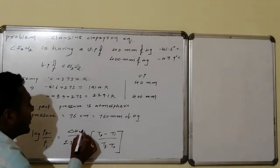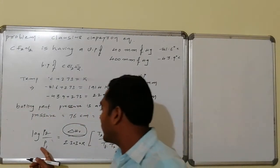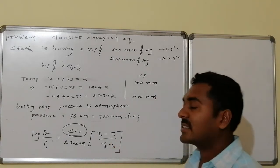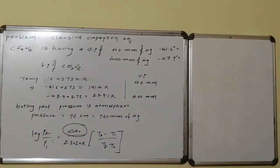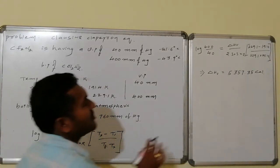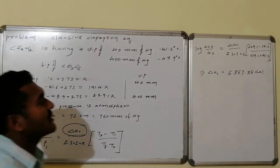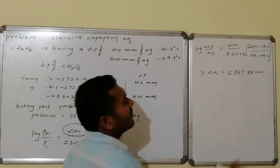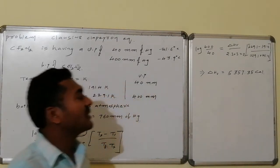Substituting the known values: log(400/40) = ΔHvap / (2.303 × 2) × (229 - 191)/(229 × 191). Solving this expression, the ΔH of vaporization is found to be 5357.35 calories.